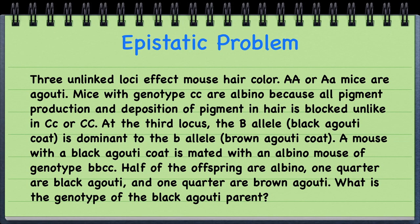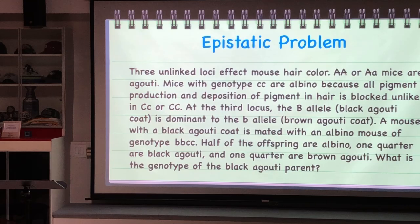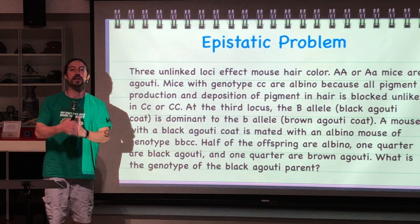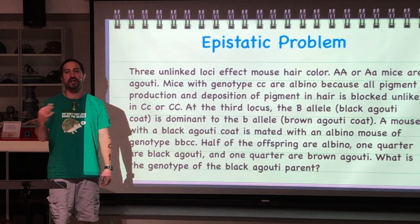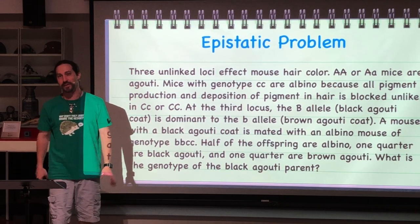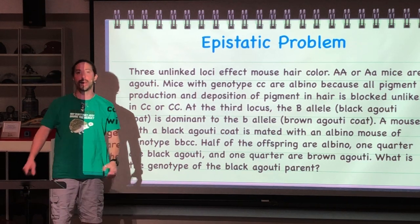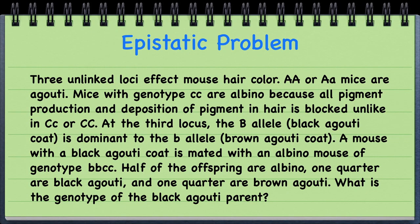So let's look at a little epistatic problem. One parent has a black agouti coat and the second parent has an albino coat. We're going to figure out the genotype of the black agouti parent based on the offspring ratios.